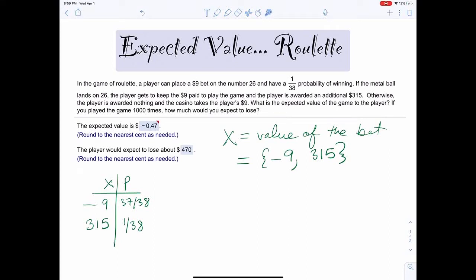Alright, I want to talk about an expected value question dealing with roulette. Let's read it. It says, in the game of roulette, a player can place a $9 bet on the number 26 and have a 1 over 38 probability of winning.